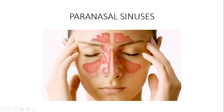There are four major paranasal sinuses, and their names are derived from the bones in which they are found. We have the frontal sinus found in the frontal bone, the ethmoidal sinus found within the ethmoidal bone, the maxillary sinus found within the maxilla, and the sphenoidal sinus which is found within the sphenoidal bone.